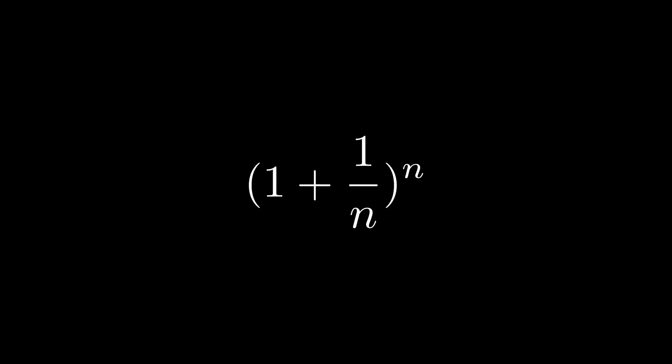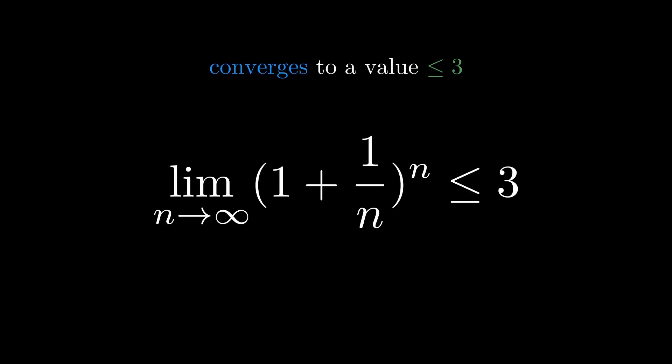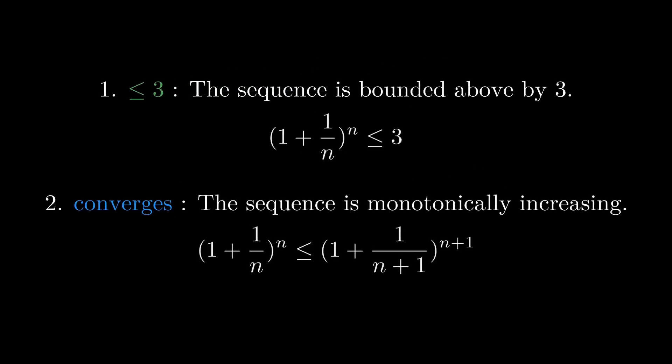By looking at the terms of this sequence, we can conclude that the sequence converges and to a value less than or equal to 3. To prove this claim, we will show that: 1. The sequence terms are bounded above by 3, and 2. That the sequence is monotonically increasing.